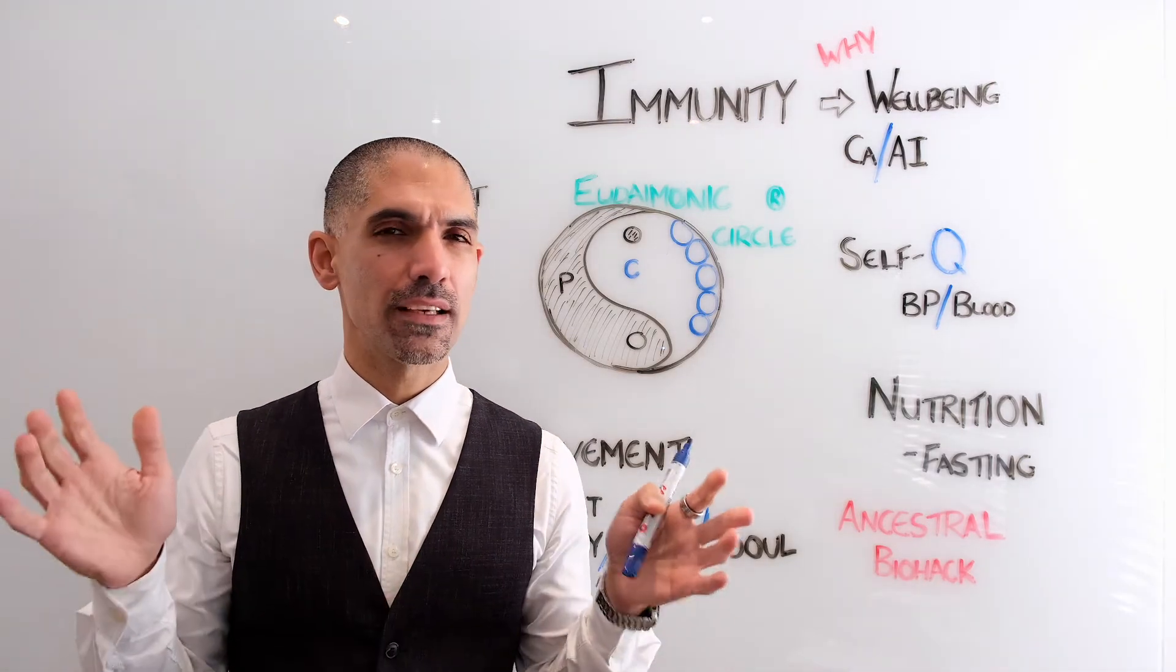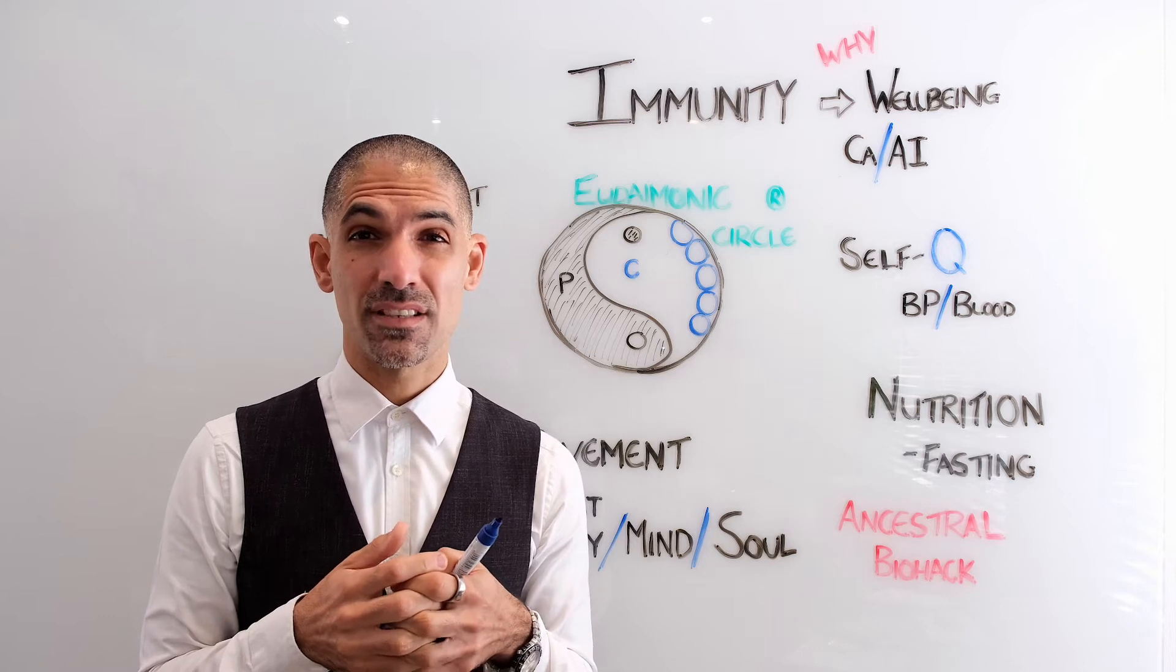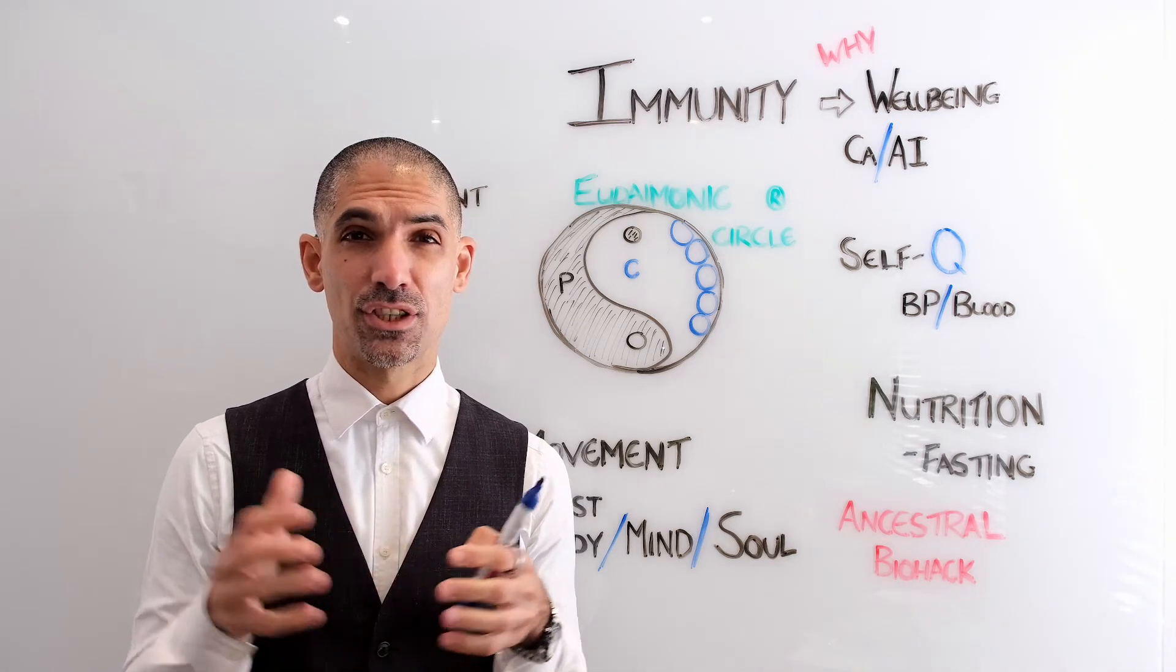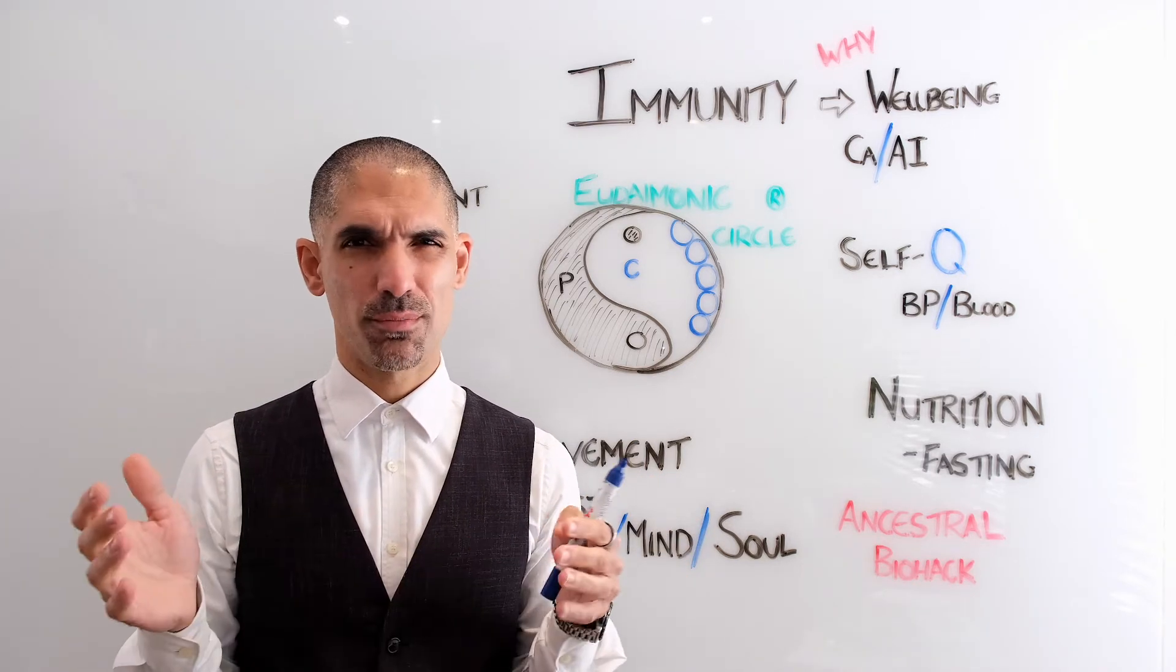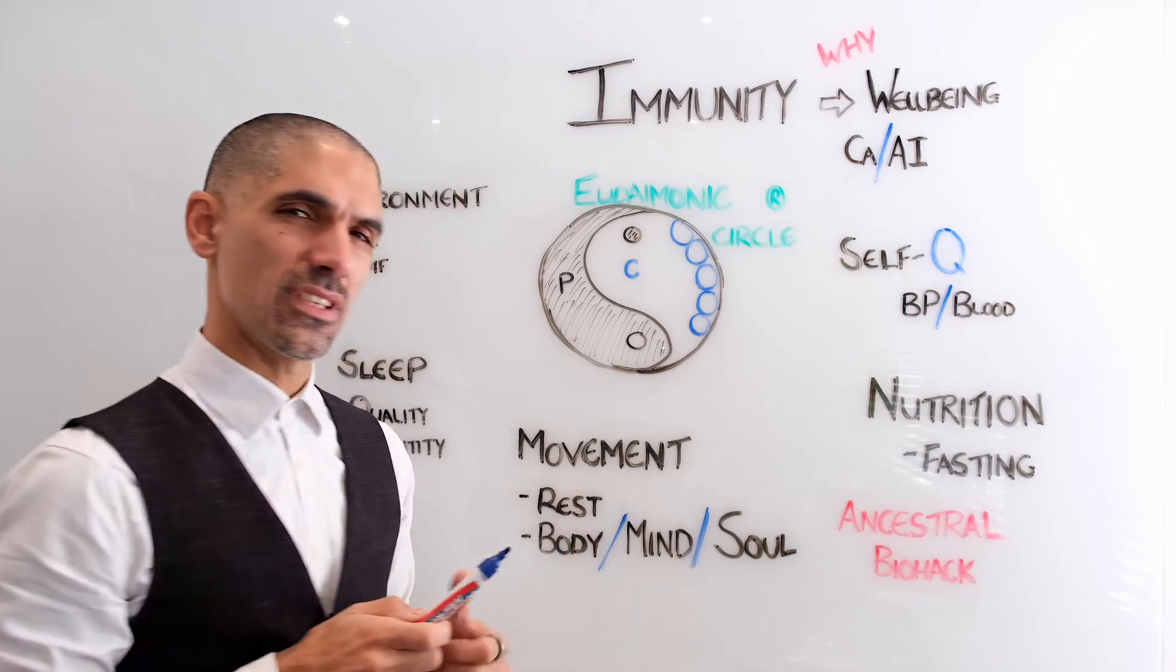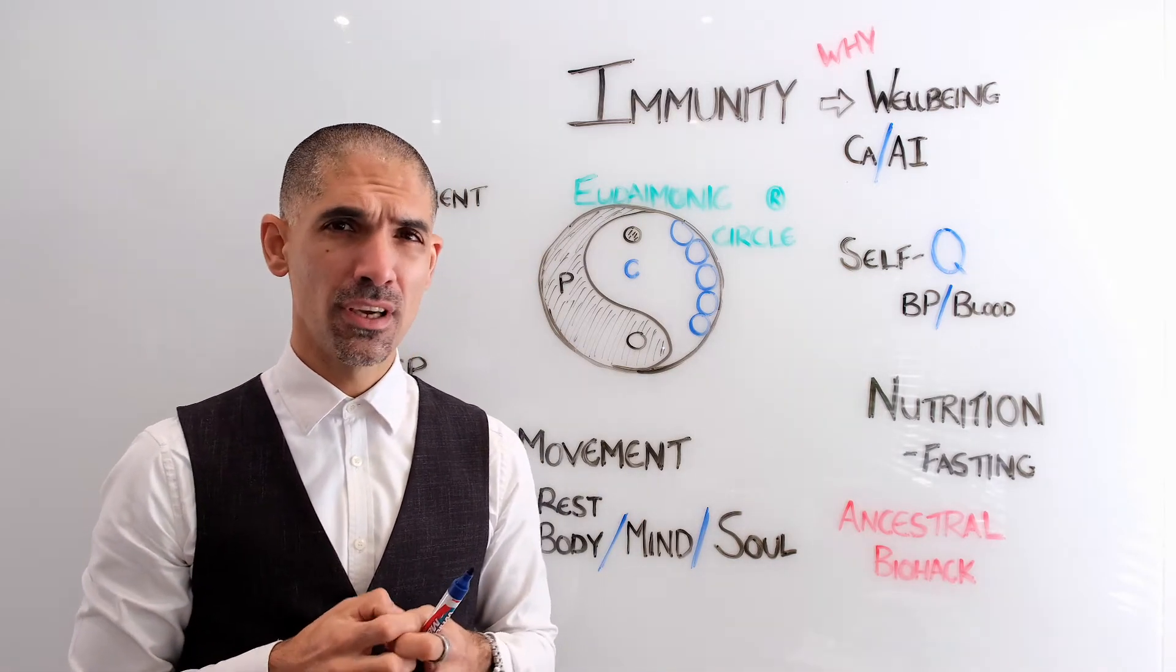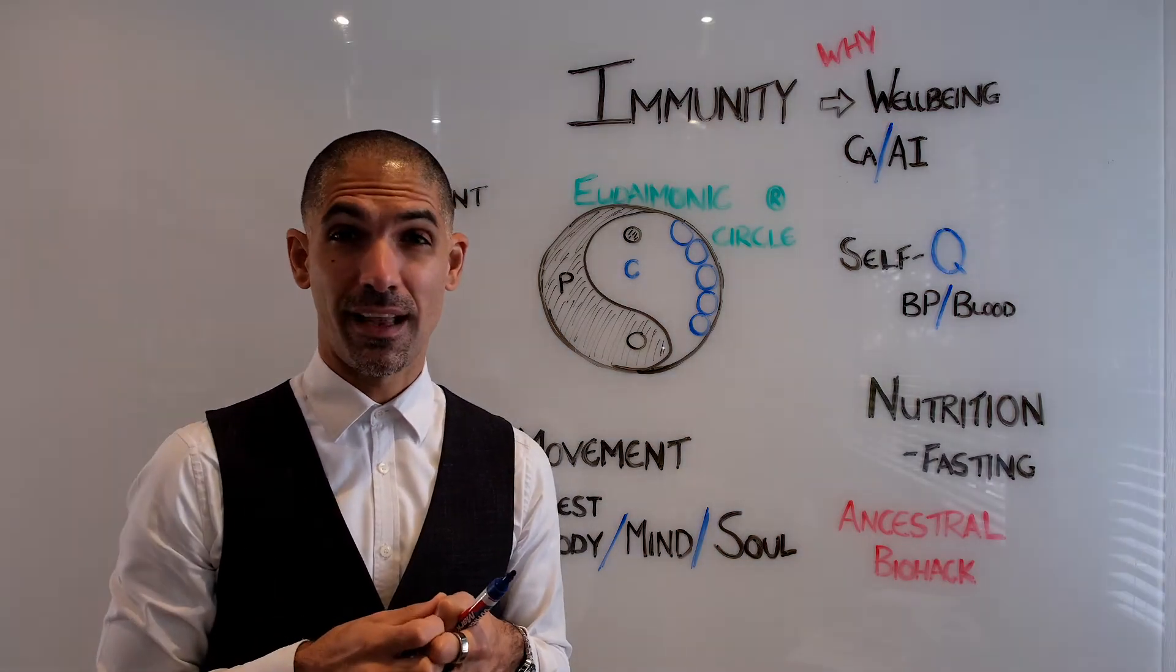So why should you even care about your immune system? Well, it's evolved in every single bodily function that you have and it gives you a general well-being if you have a strong immune system. It's also important to stave off serious conditions like cancer and autoimmune conditions like rheumatoid arthritis and lupus. So vital for you to optimize your mind, body and soul.